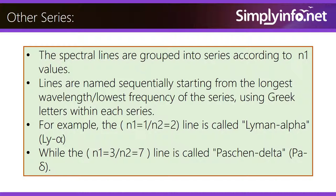While the N1 equals 3, N2 equals 7 line is called Paschen-delta.